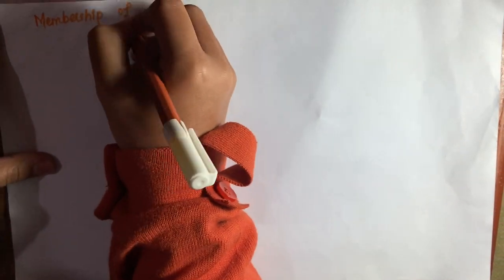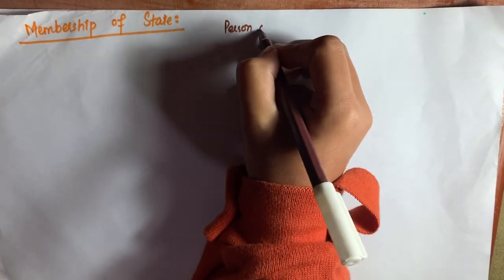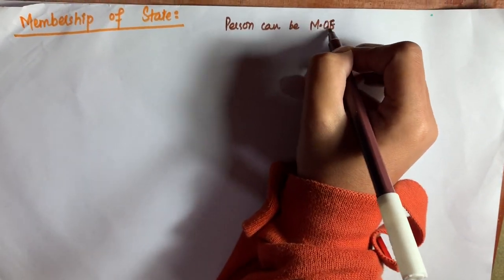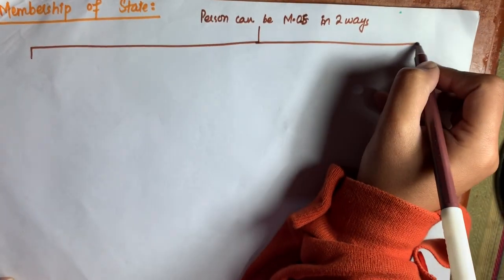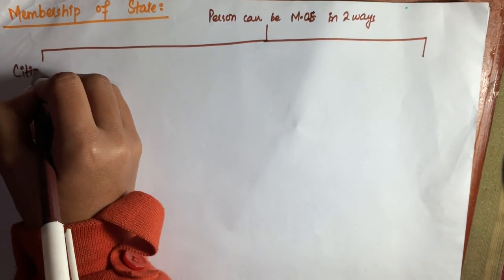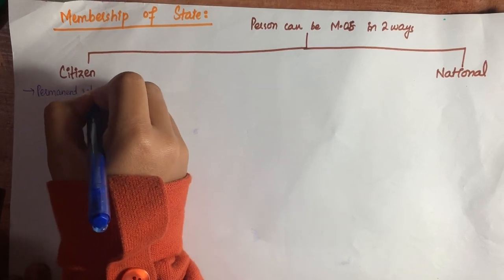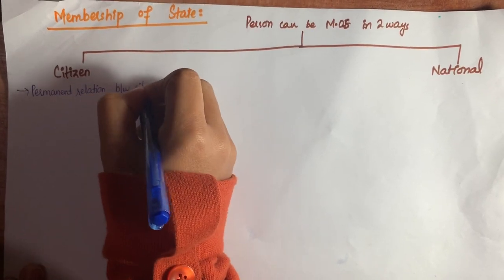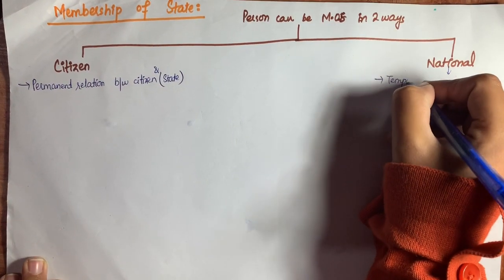The next topic is membership of state. A person can become a member of state in two ways: number one, by citizenship; and number two, by nationality.